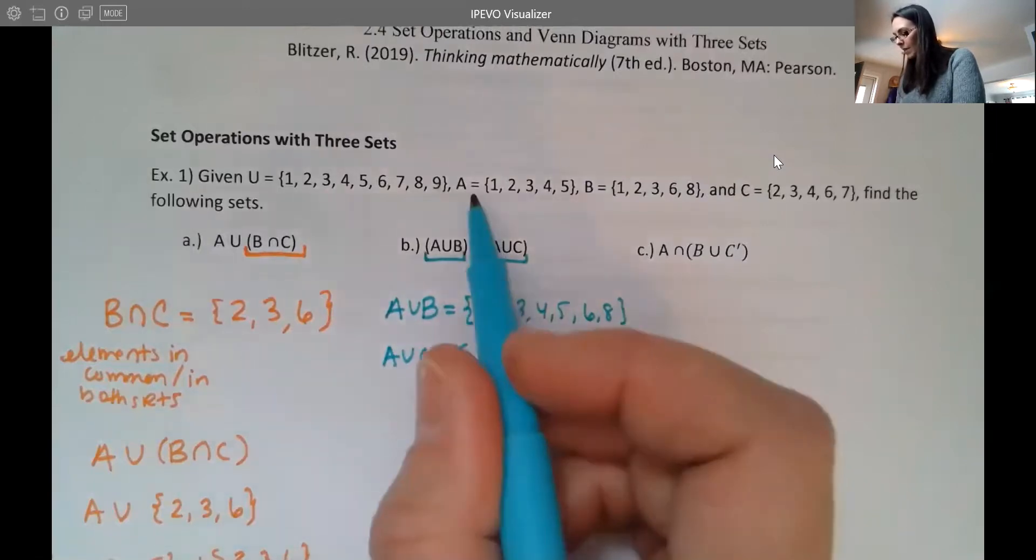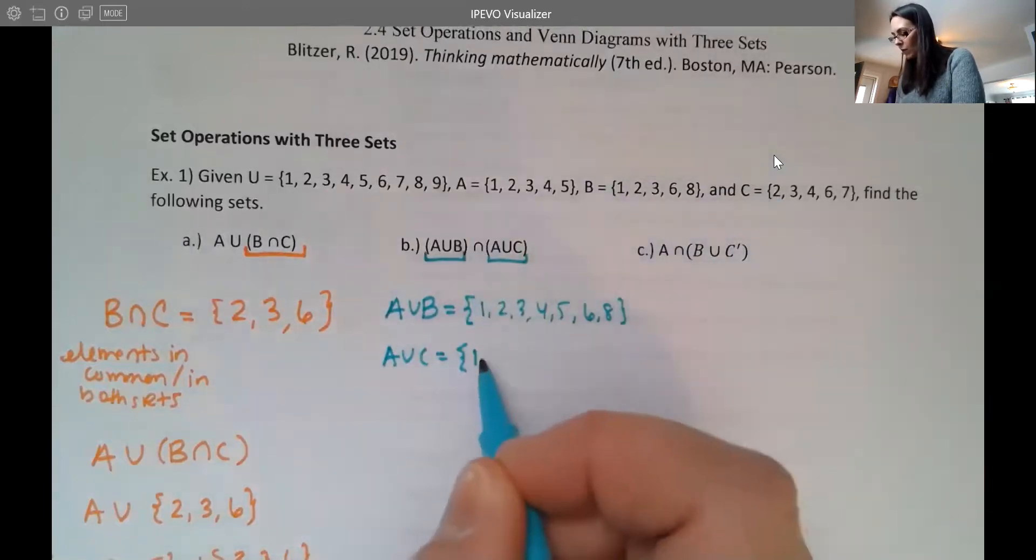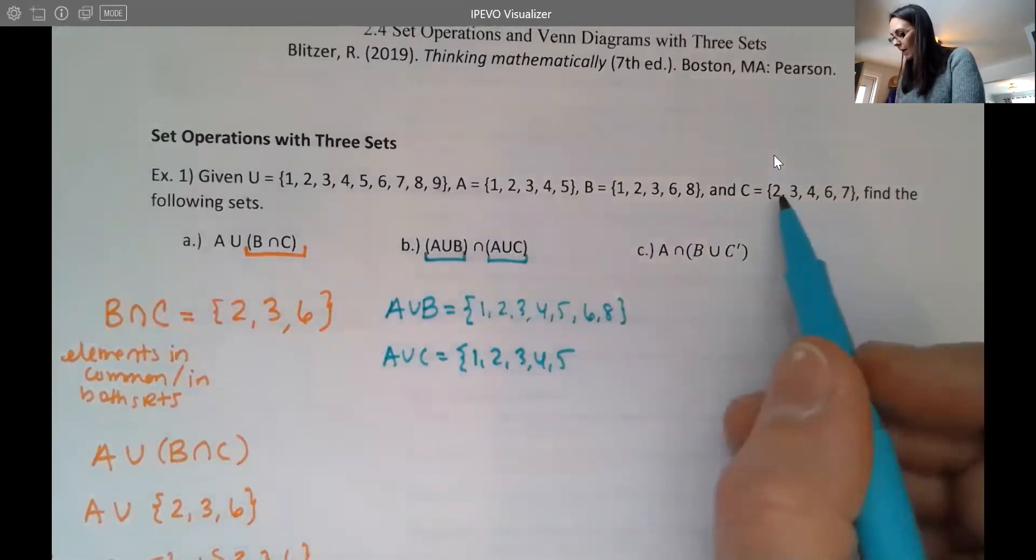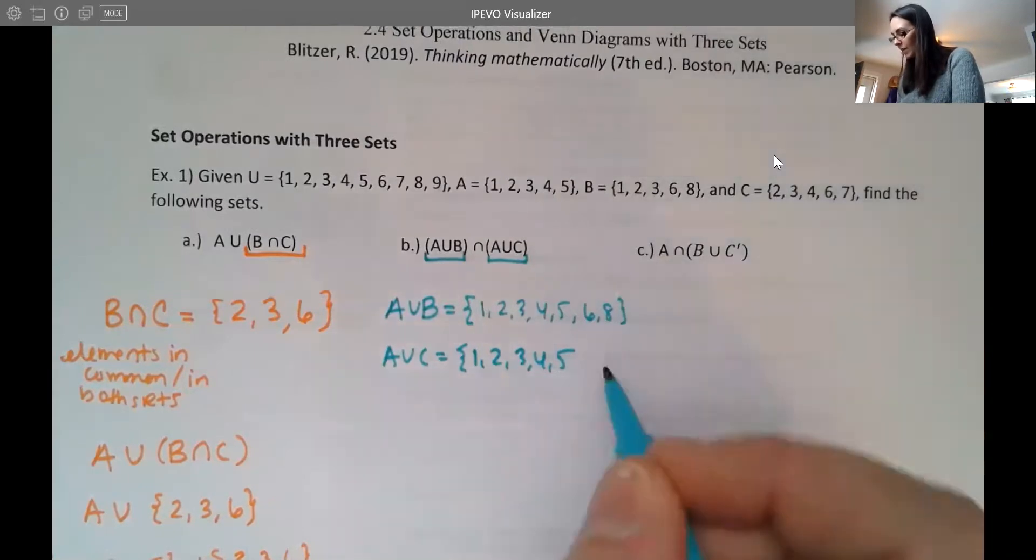I'm going to do the same idea with A union C. So again, I'm combining sets A and C together here. So I have one, two, three, four, five. And then from C, I have two, three, and four already included, but then I see a six and a seven.